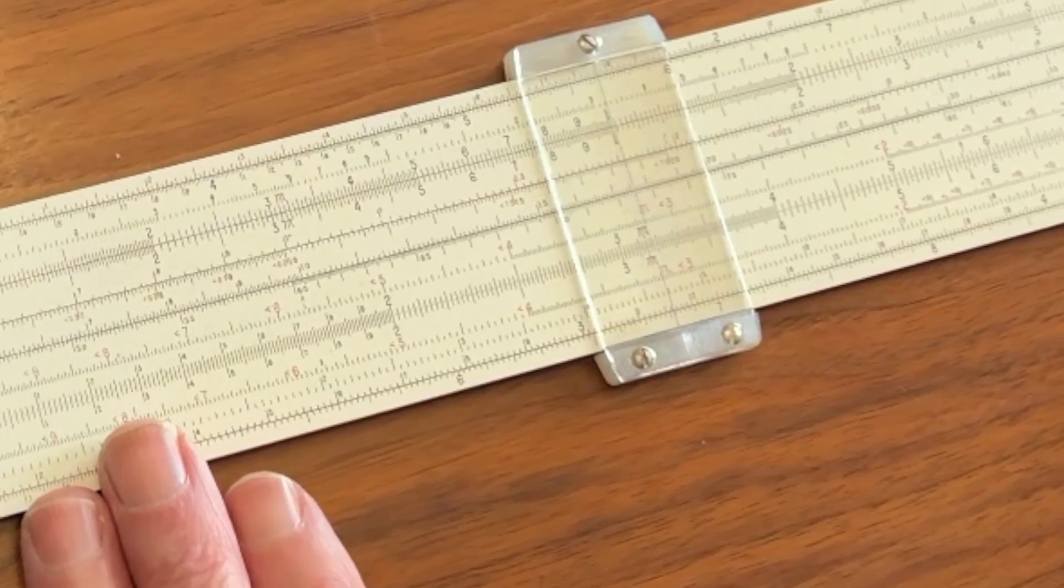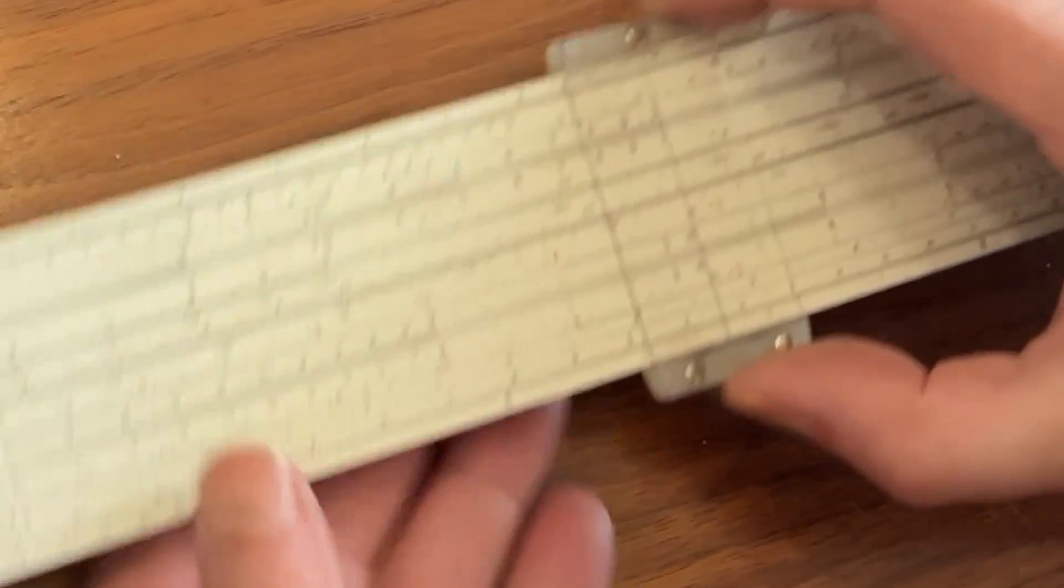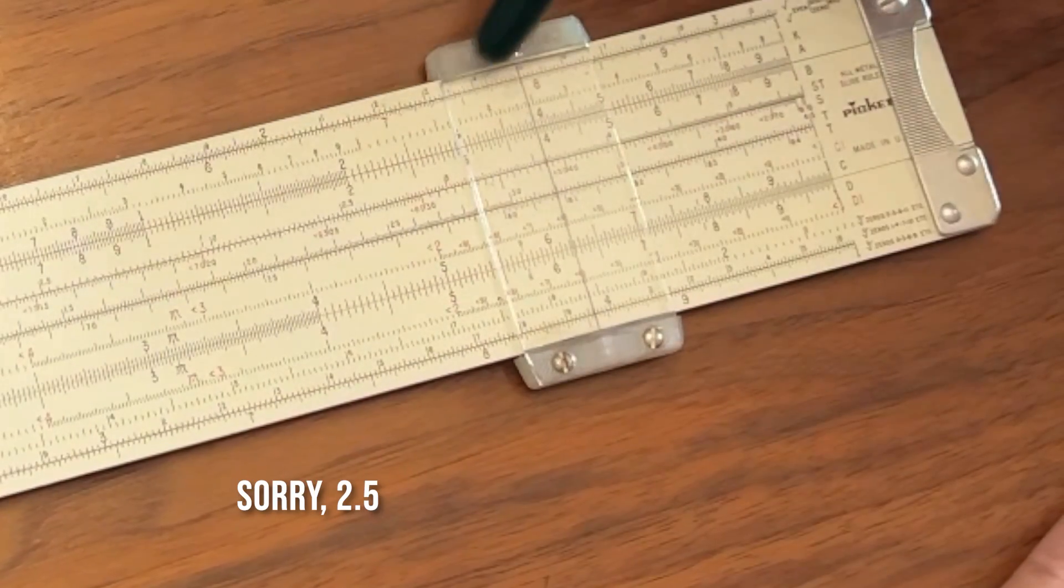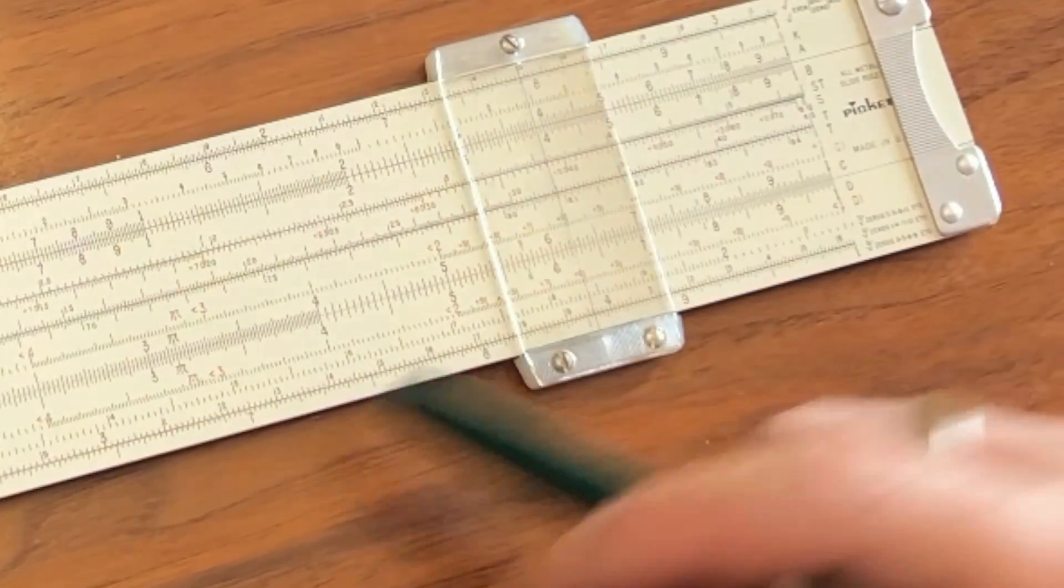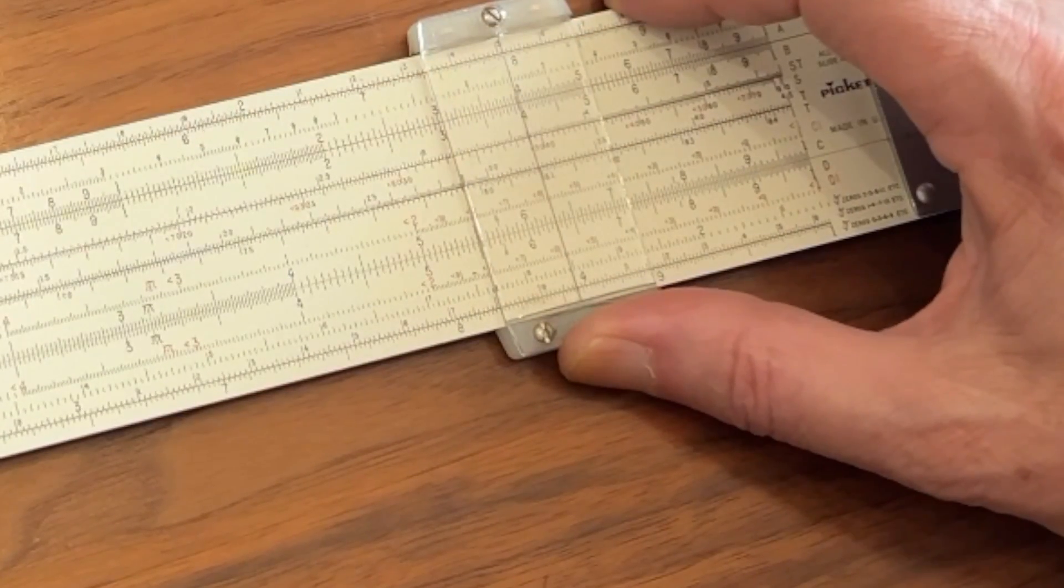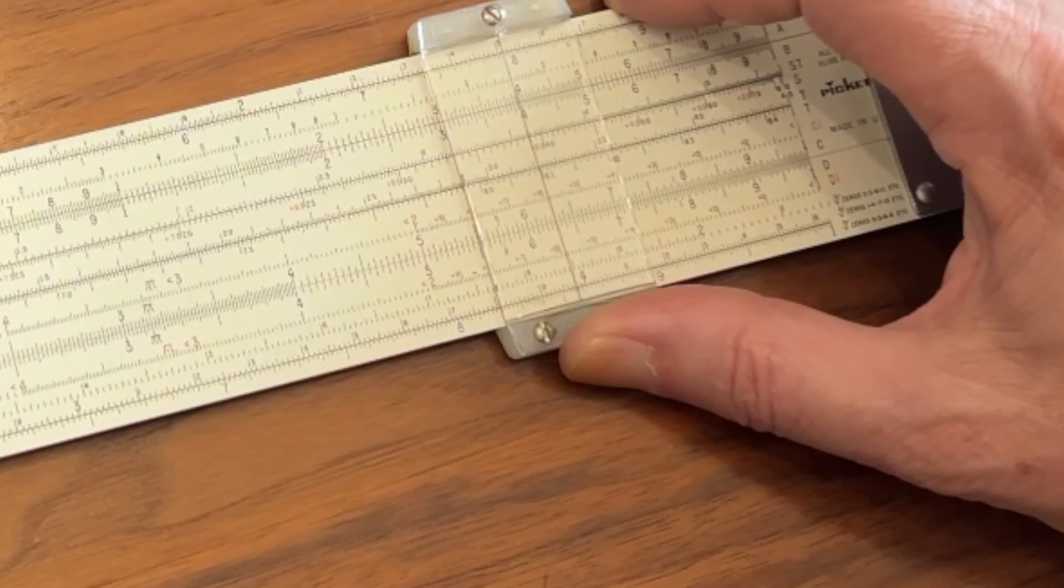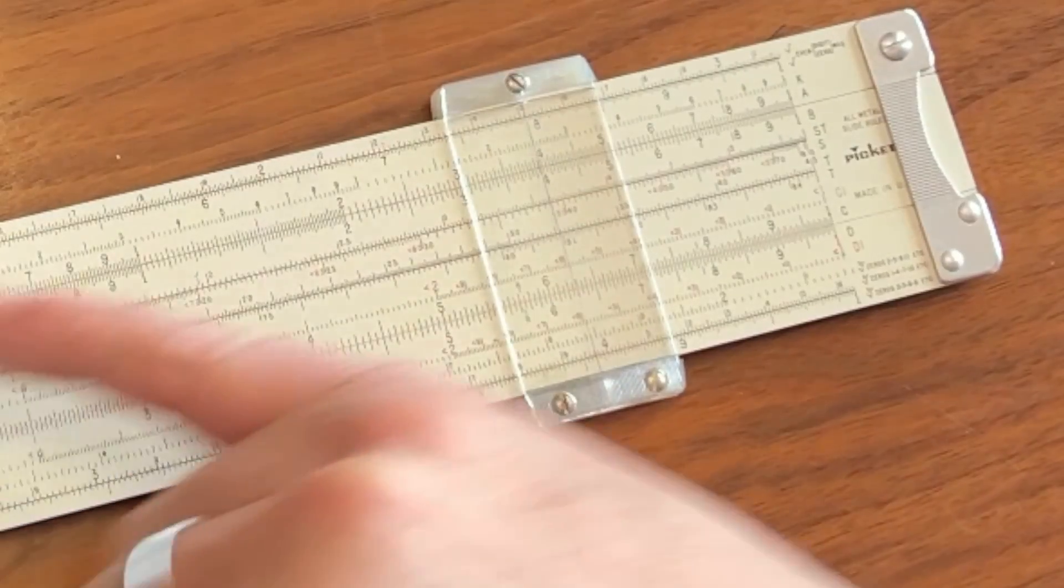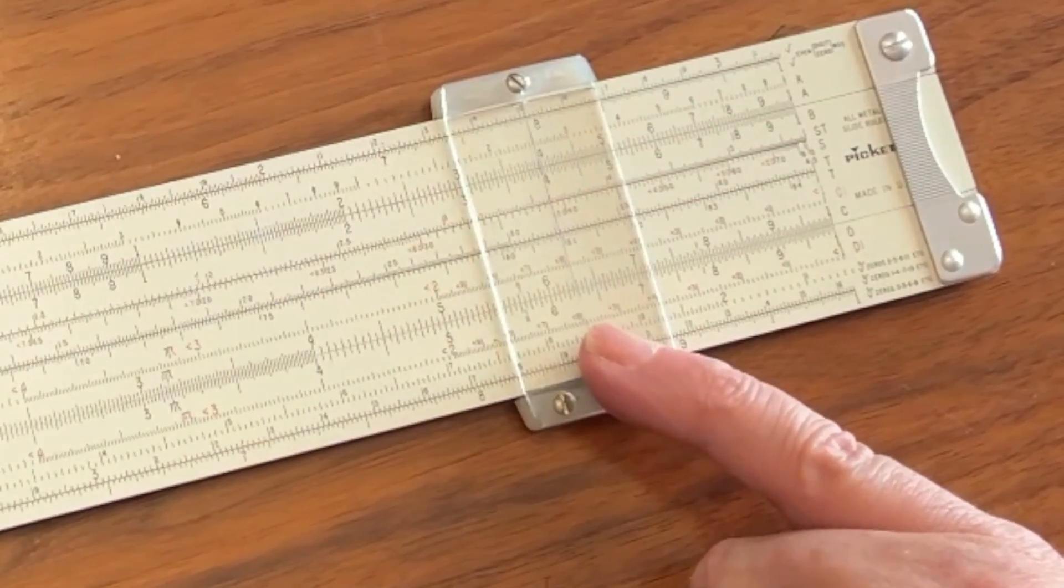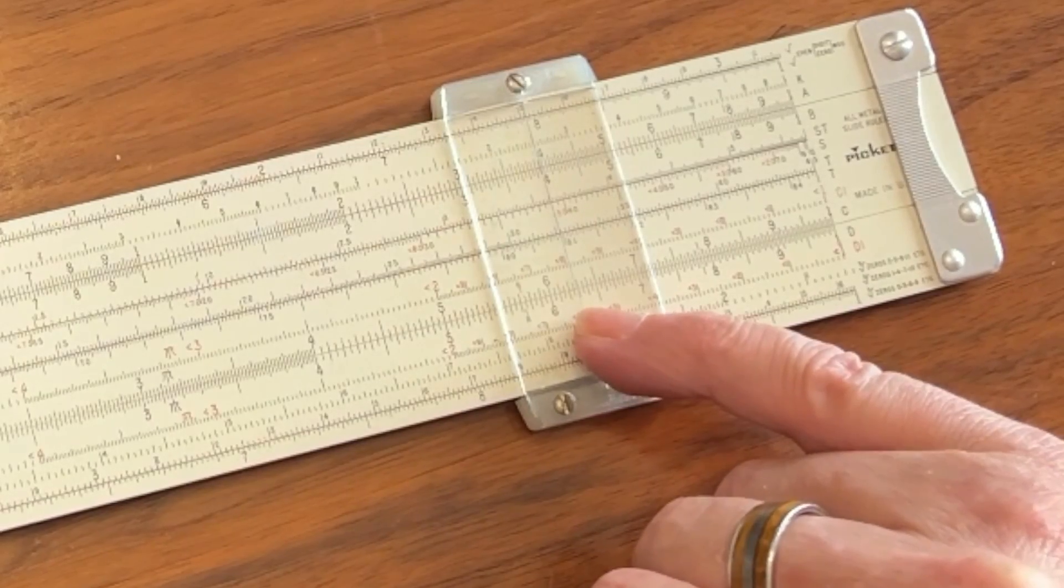To square a number very accurately, say we want to go out here to 2.5. We come up to the top square root scale, and we come out to 3.5, and then we read straight down onto the C scale, and as you can see, the answer is 6.25. So because we have a double length scale here on the top, we get a very accurate result down on the C scale.